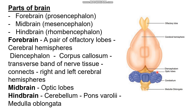The midbrain is composed of optic lobes, located in the posterior part. The hindbrain contains the cerebellum, pons varolii, and medulla oblongata. For detailed study of these parts, we will cover them in our next unit on the Human Brain, also called the Mammalian Brain.